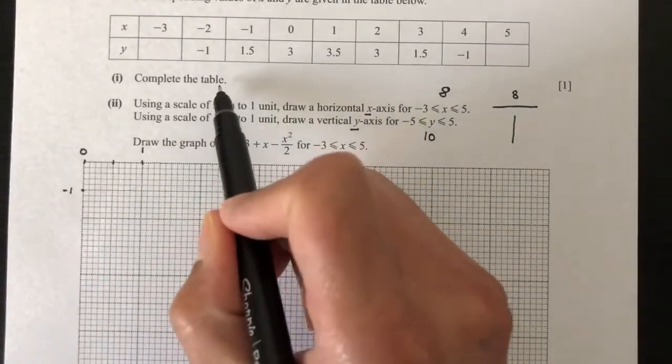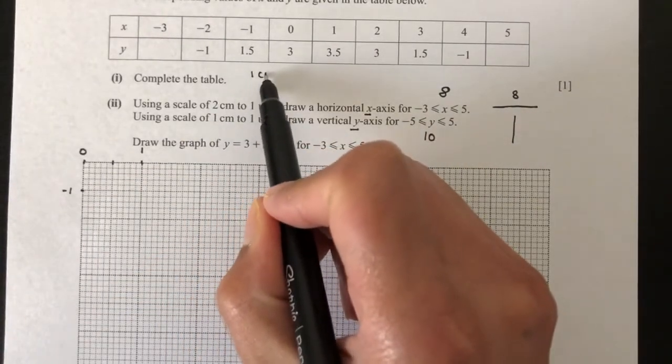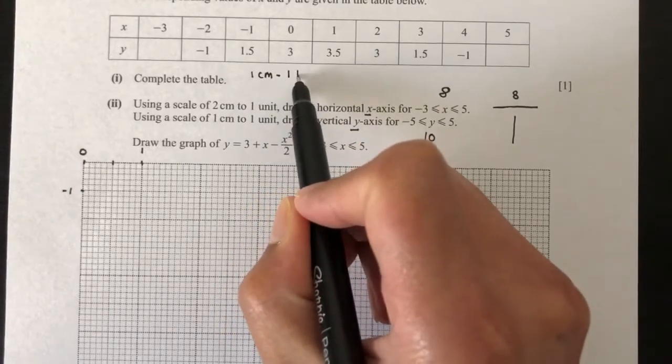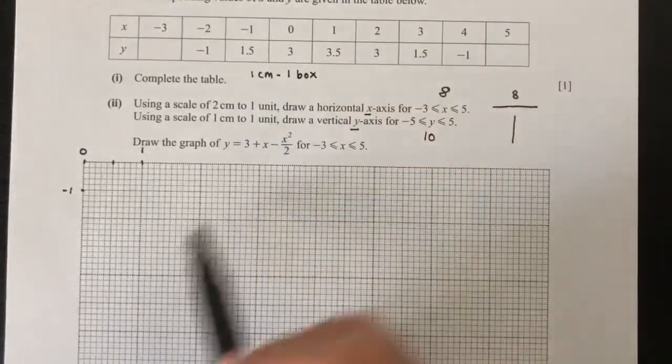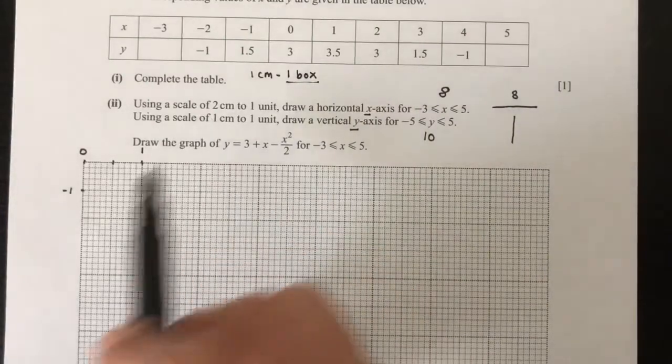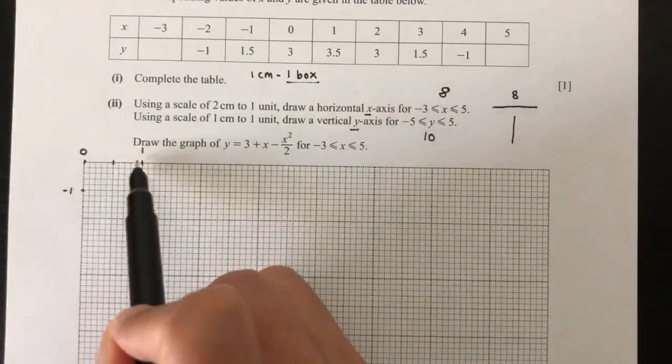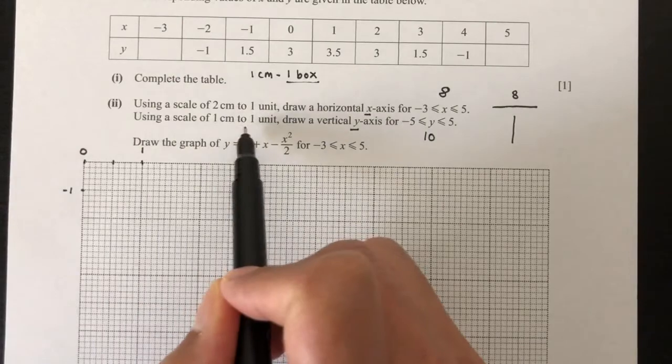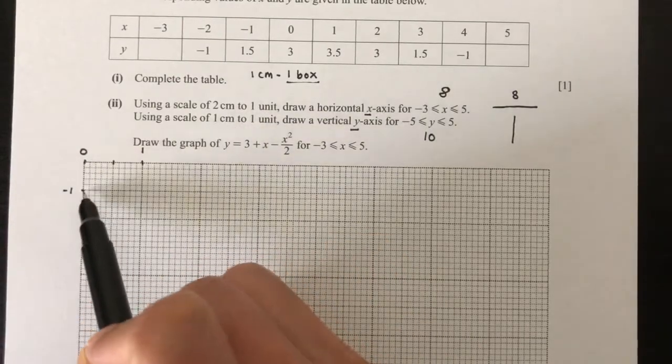Just to write this down. 1 centimeter means 1 box. So on the horizontal x-axis, every 2 boxes is 1 unit. On your vertical y-axis, every 1 box is 1 unit.